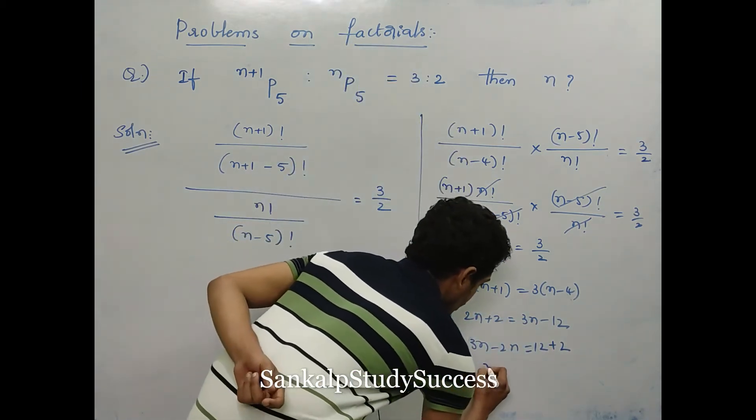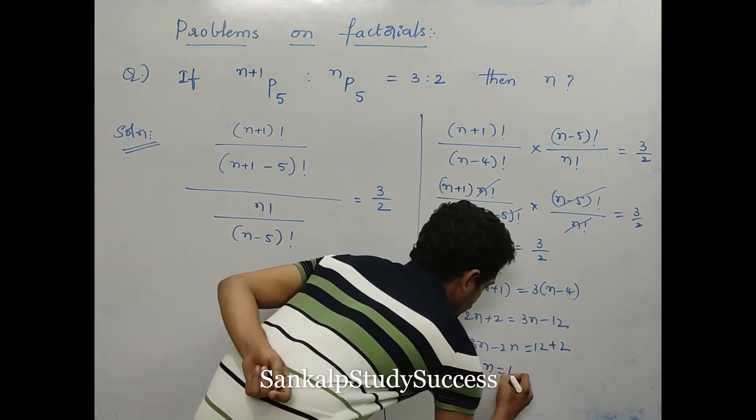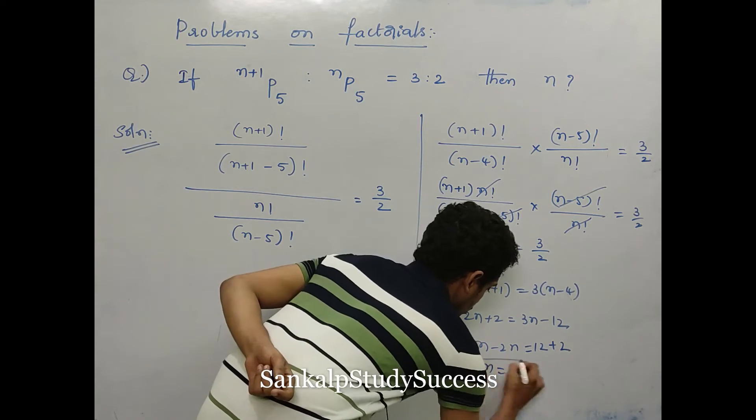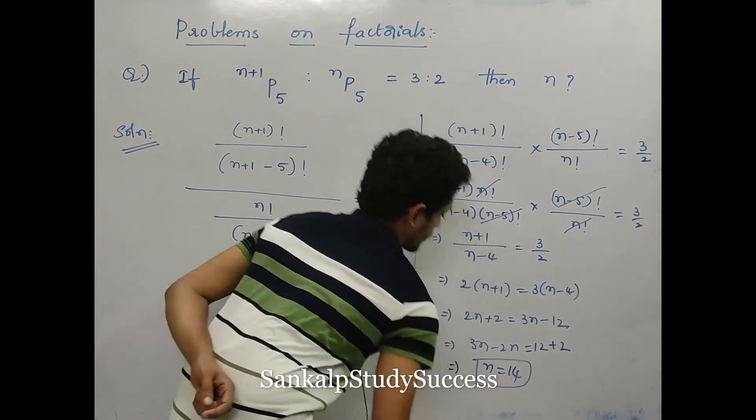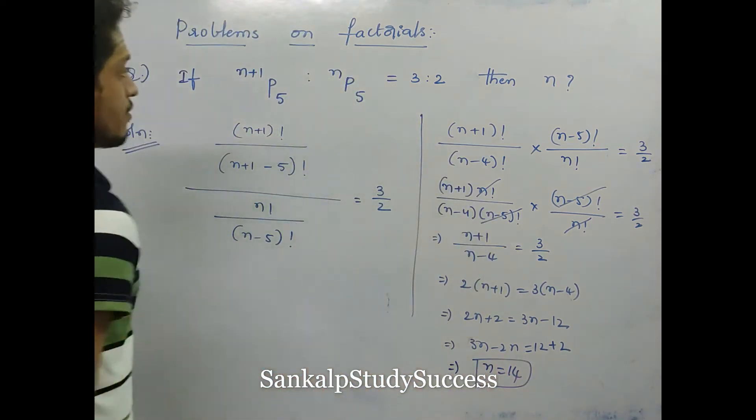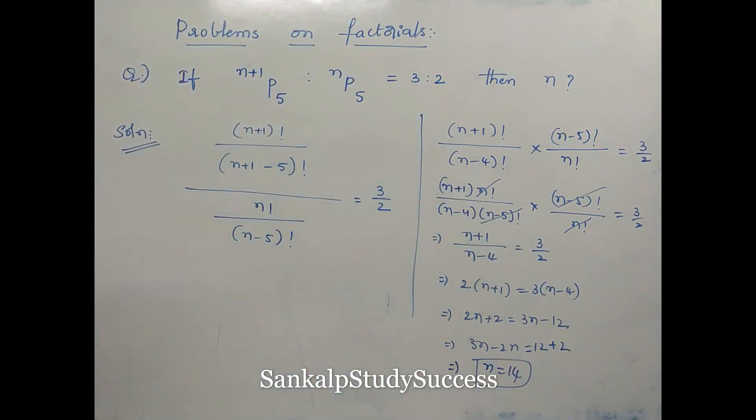So 2(n+1) equals 3(n minus 4), giving 2n plus 2 equals 3n minus 12, therefore n equals 14. Please note this.